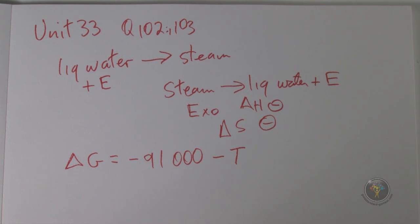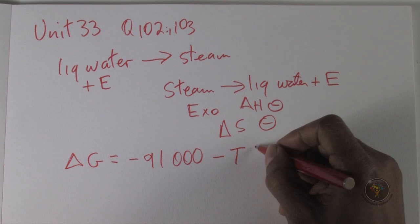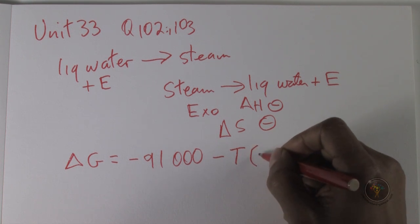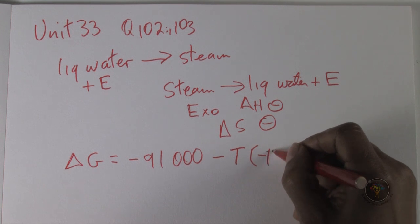First of all, absolute zero has never been obtained exactly, and so definitely you can't go below absolute zero. And then this is multiplied by delta S, which is minus 172.